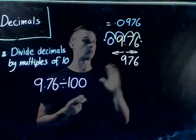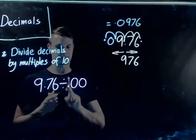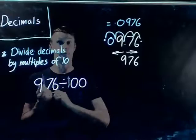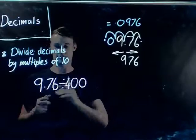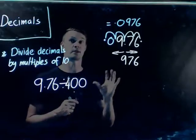Now what happens if instead of one, we have four. So, what if it's 9.76 divided by 400? Well, we basically do the same process.